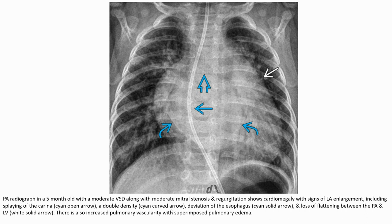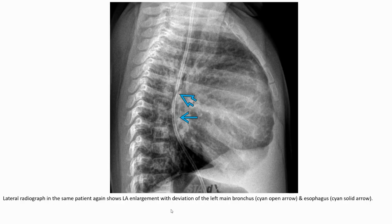On chest radiograph, with signs of left atrial enlargement including splaying of the carina (open arrow), double density sign (pearl arrow), deviation of the esophagus (solid arrow), and loss of flattening between the pulmonary artery and left ventricle (solid arrow). There is also increased pulmonary vascularity. On the lateral chest radiograph, left atrial enlargement with deviation of the left main bronchus (open arrow) and esophagus (solid arrow) is noted.